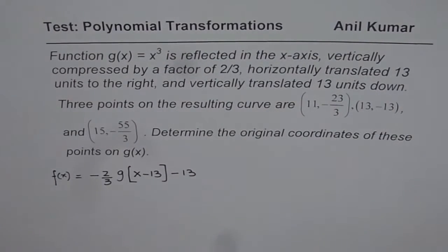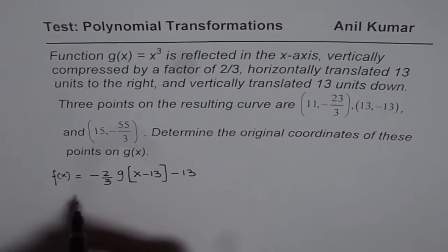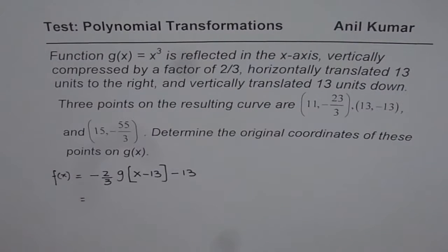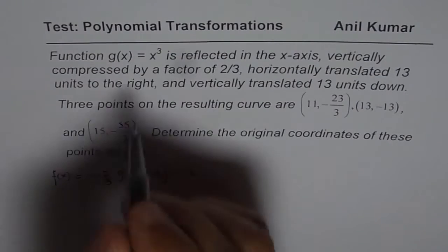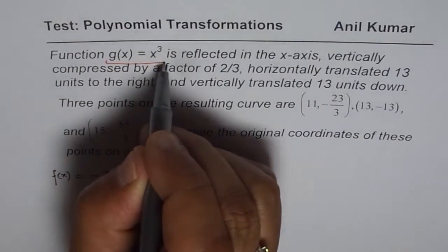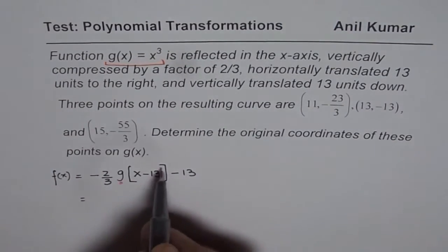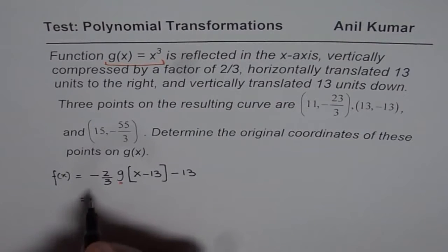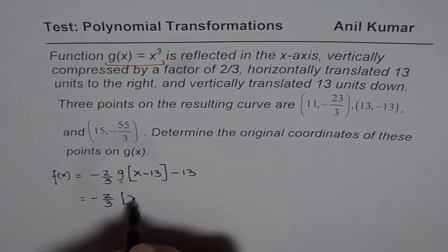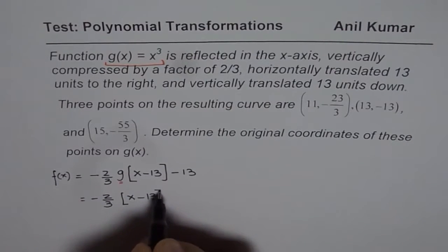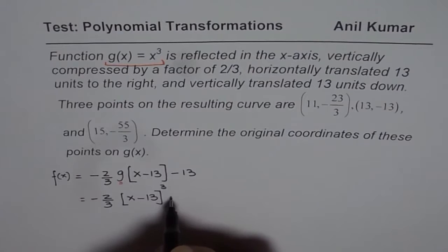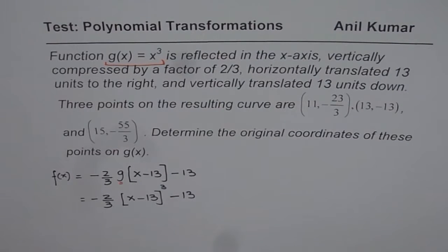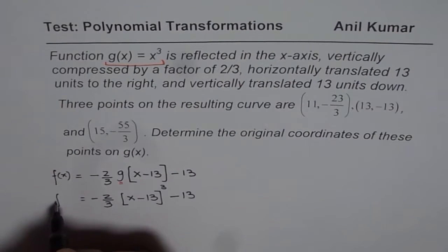That is the general form. Since we are given that g(x) = x³, we will write this as a cubic function. So we have f(x) = -2/3 · (x - 13)³ - 13. That becomes the transformed function f(x).